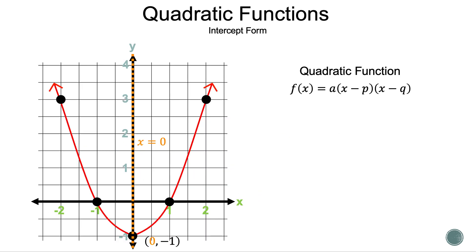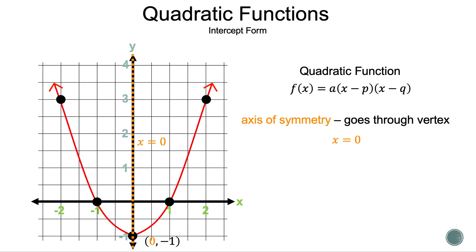Let's take a look at an example of a quadratic function in intercept or factored form. The form we want is f(x) = a times the quantity (x minus p) times the quantity (x minus q), where p and q are the x-intercepts.